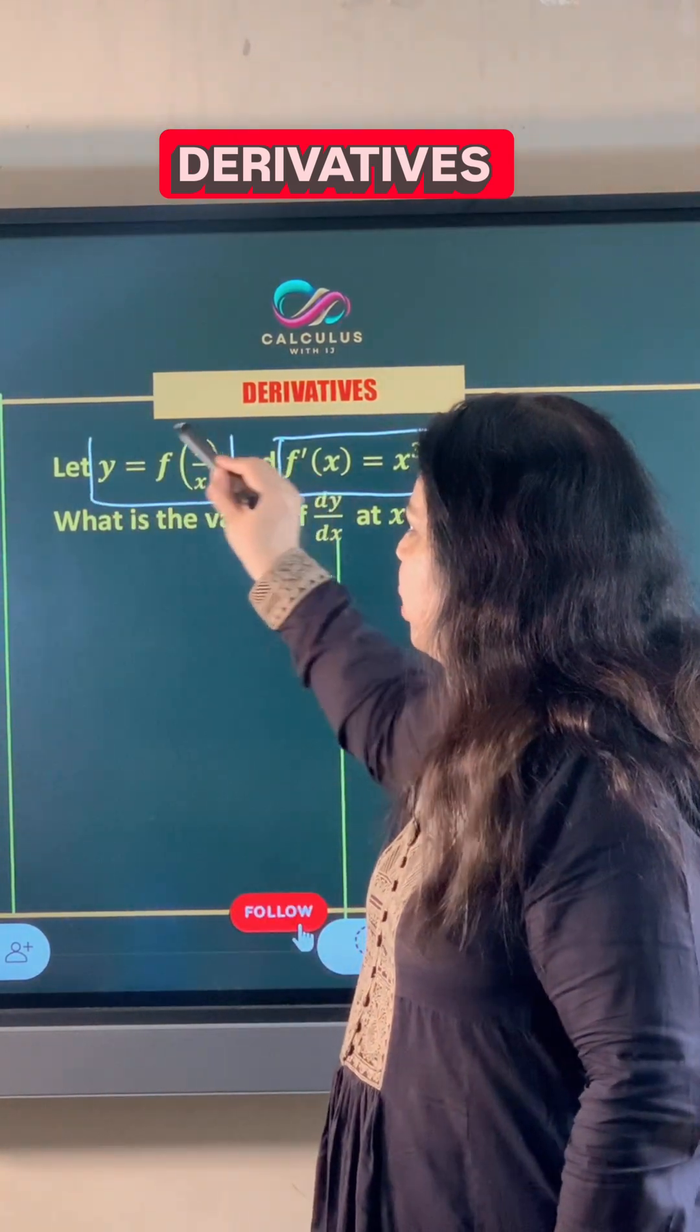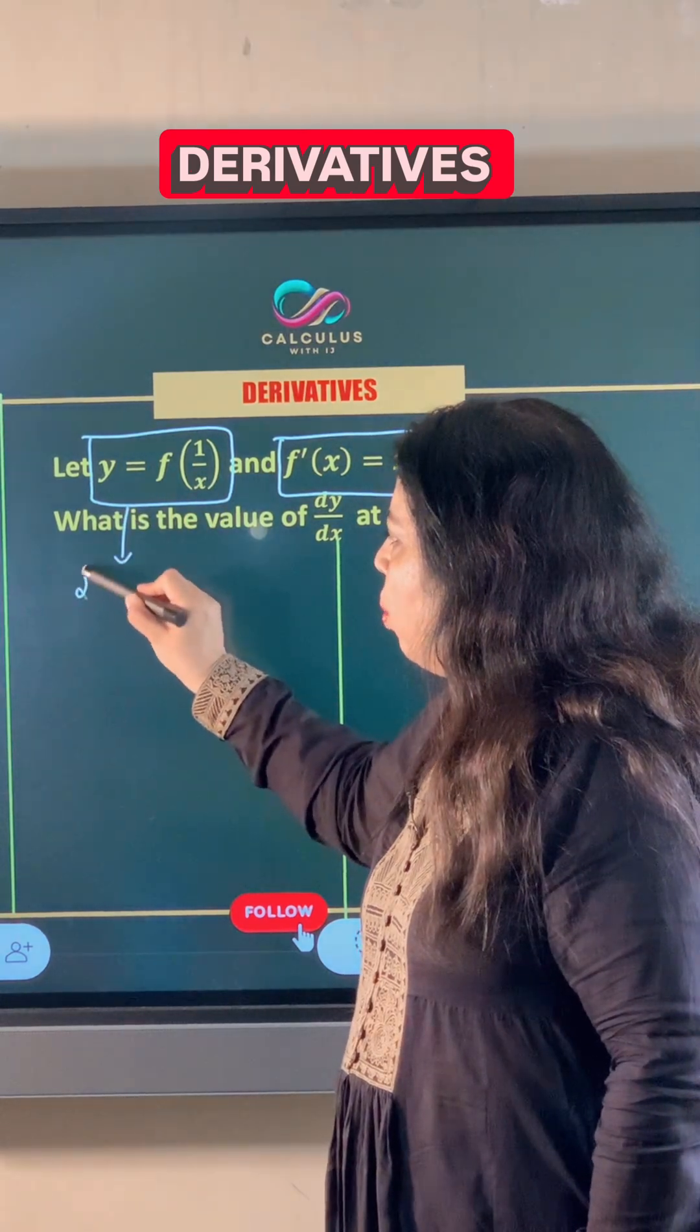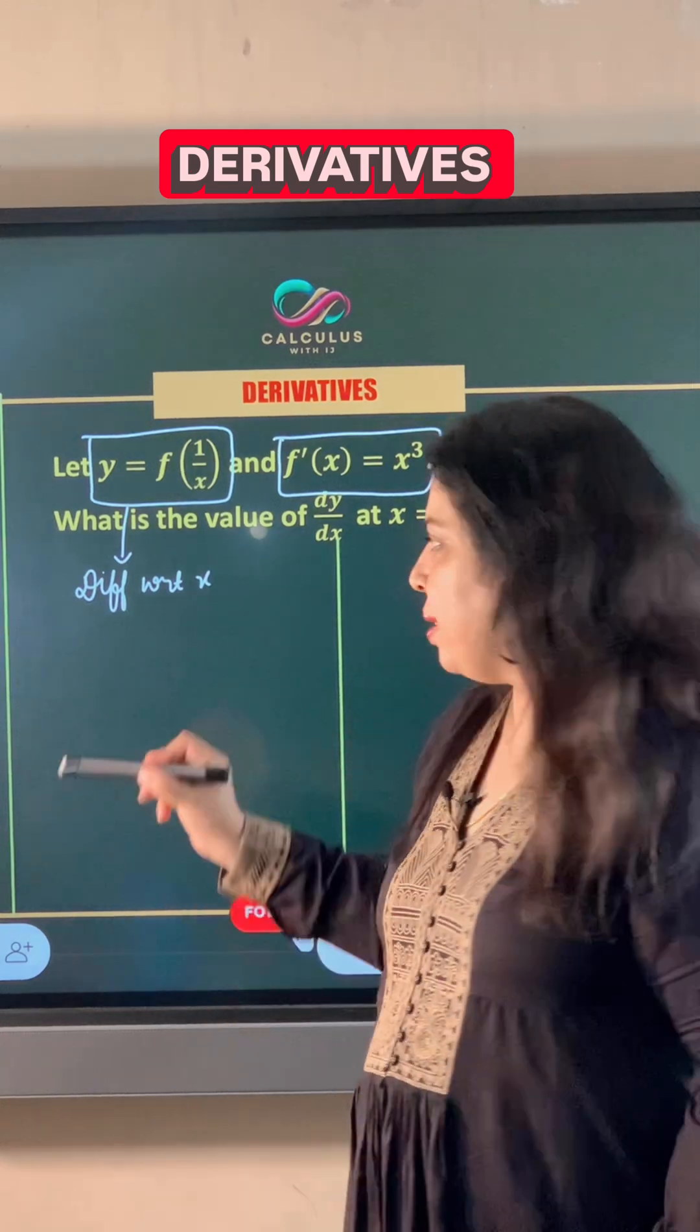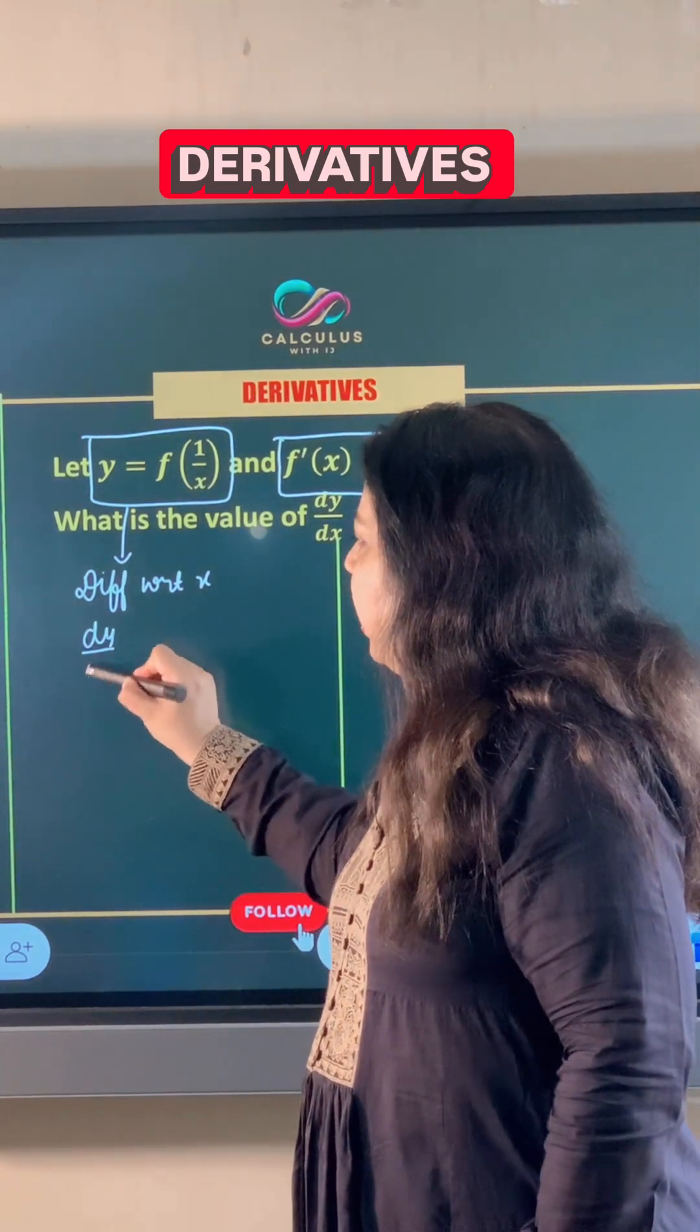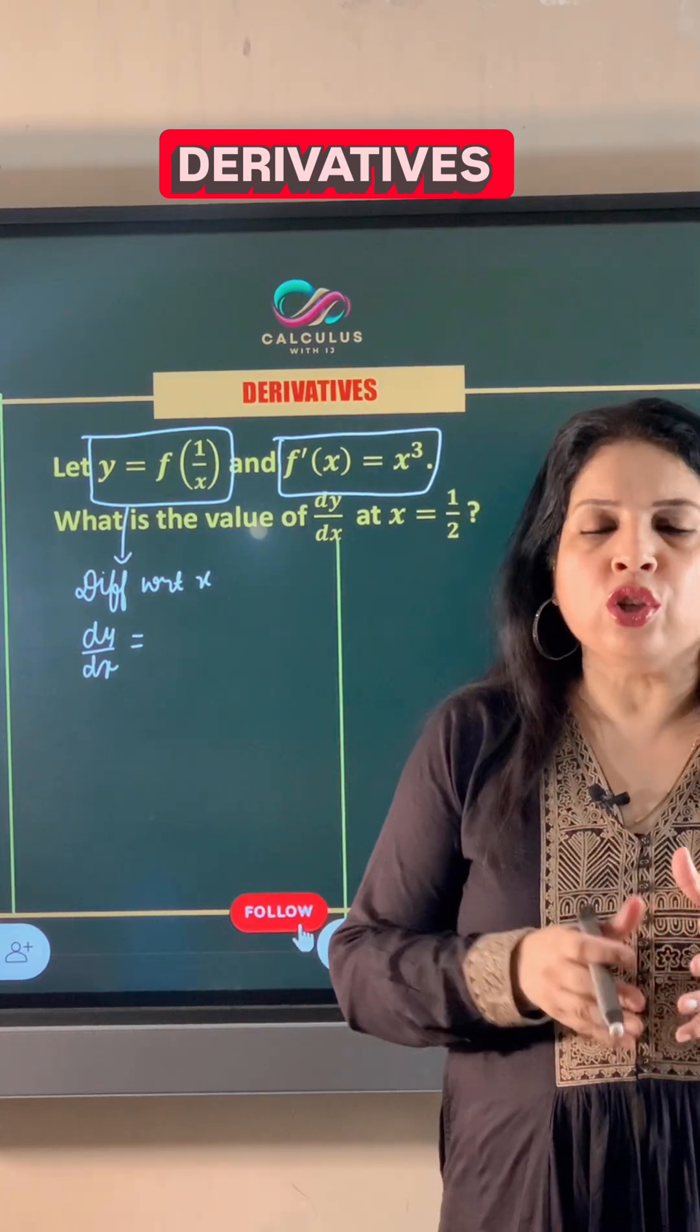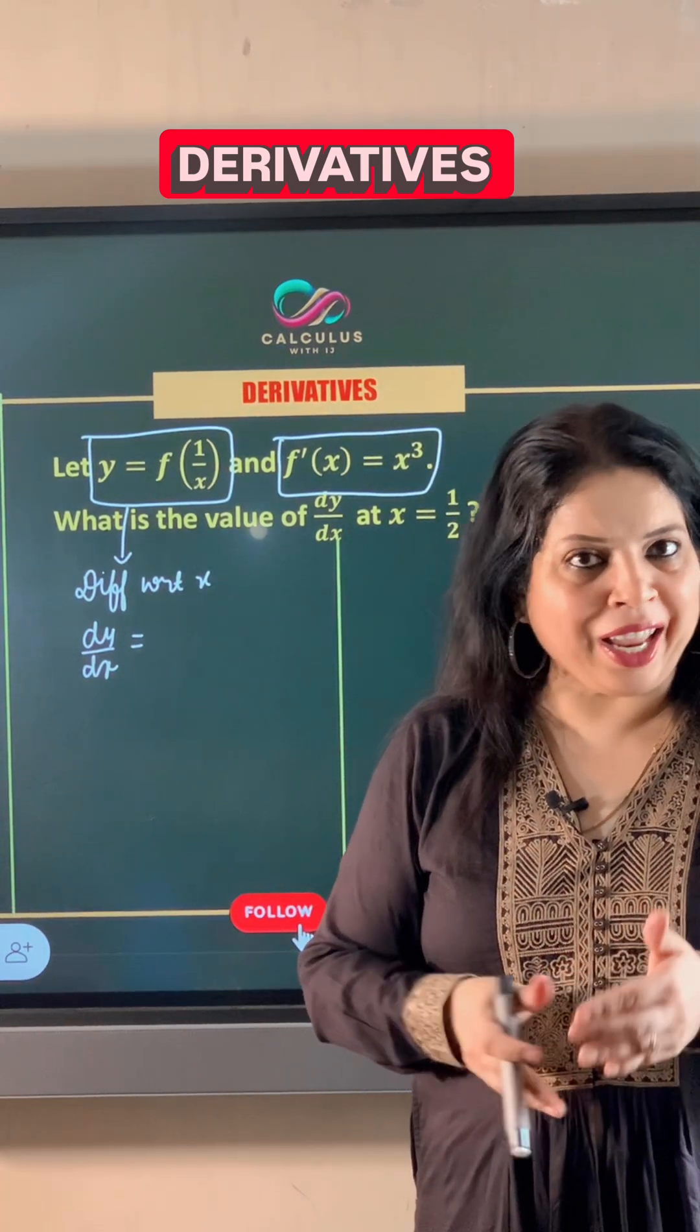So let's take this expression and differentiate both sides with respect to x. Now, the derivative of y with respect to x is dy/dx, and the derivative of f(x)—since f(x) is a function—its derivative is denoted by f dash x.